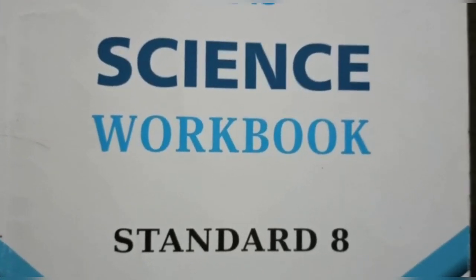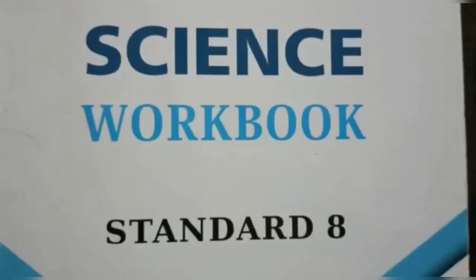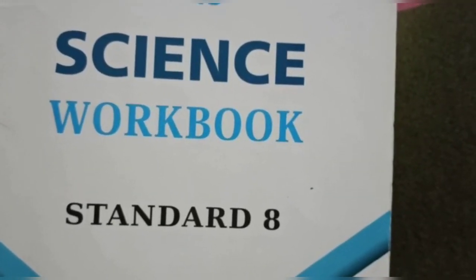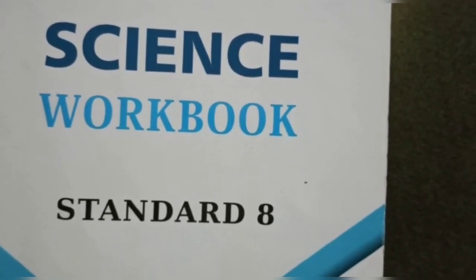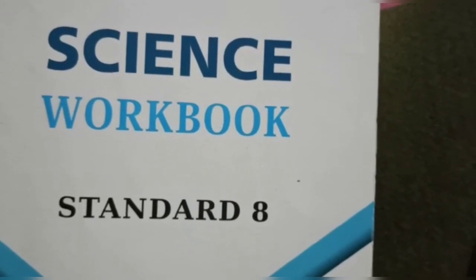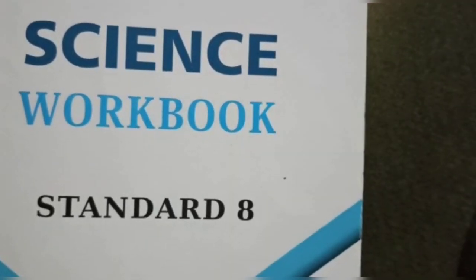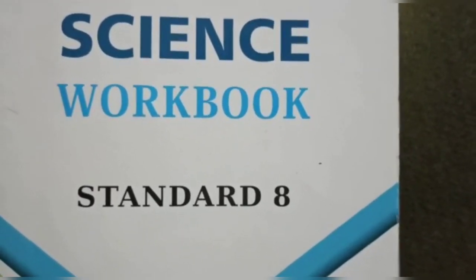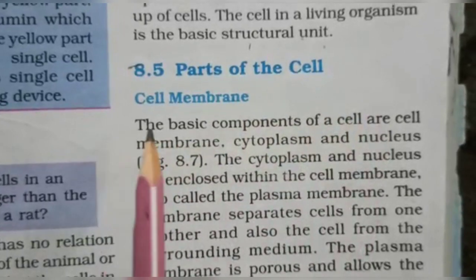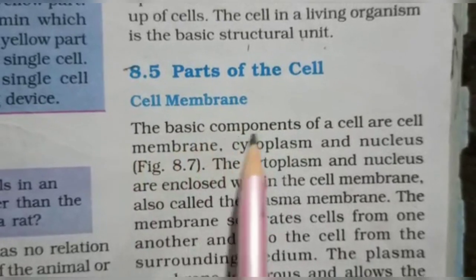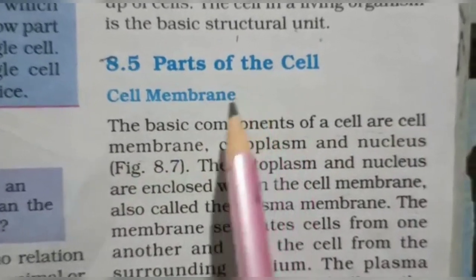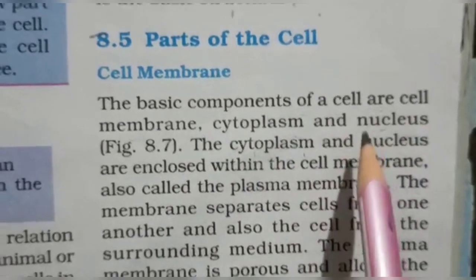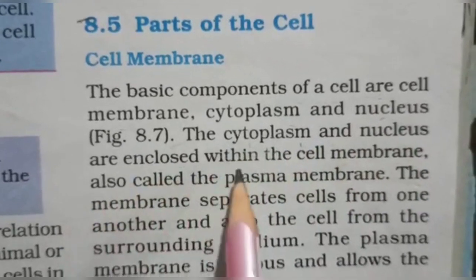Good morning students. In our last lecture we started chapter 8 and half completed it. Chapter 8 is about the cell — the discovery of the cell, cell as structural units, number of cells in organisms, varieties in cell shapes and sizes, and cell structure. Now today we will discuss the parts of the cell. The basic components of a cell are: cell membrane, cytoplasm, and nucleus.